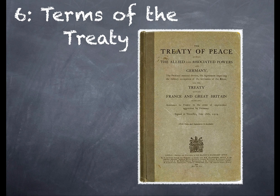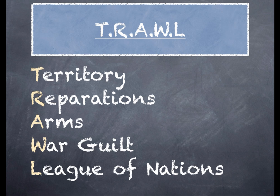In this lesson we're going to look at the actual terms of the Treaty of Versailles and consider how much each of the Big Three got what they wanted. Copy this mnemonic: T-R-A-W-L. T stands for territory - the land Germany lost. R stands for reparations - the money Germany had to pay in money and raw materials such as coal. A stands for arms - restrictions on the army and military equipment. W stands for war guilt - Germany was blamed for World War I. And L stands for League of Nations.